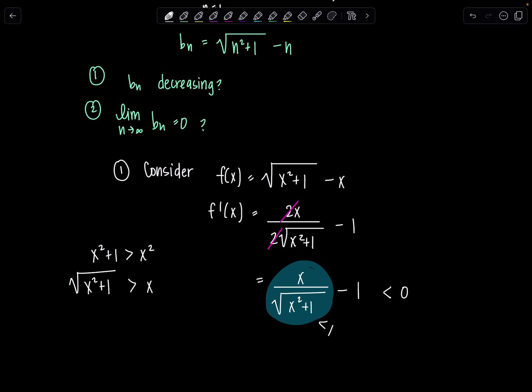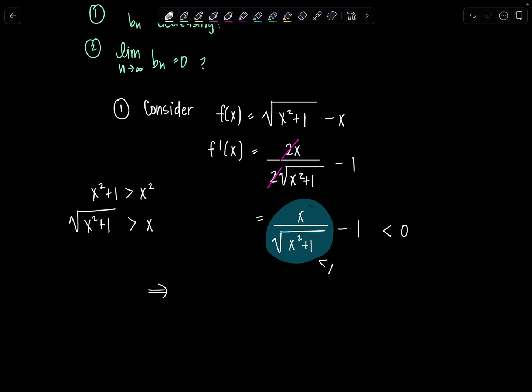So if the derivative f prime is negative, then that means f of x is decreasing, which tells me that my sequence bn is also decreasing.